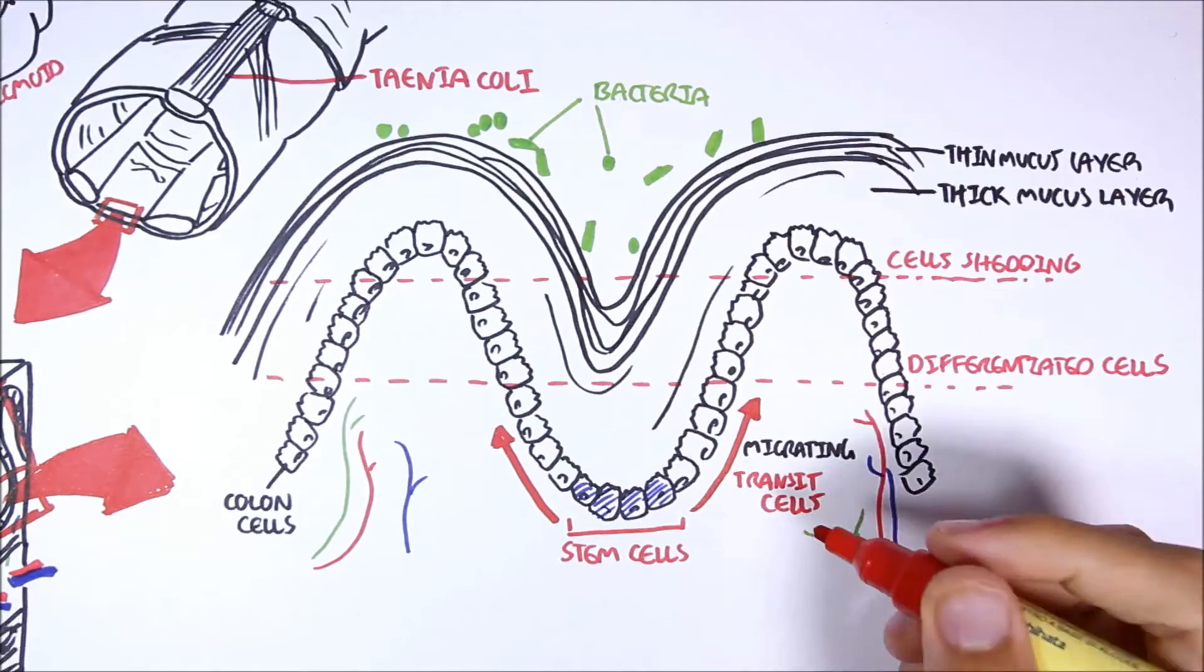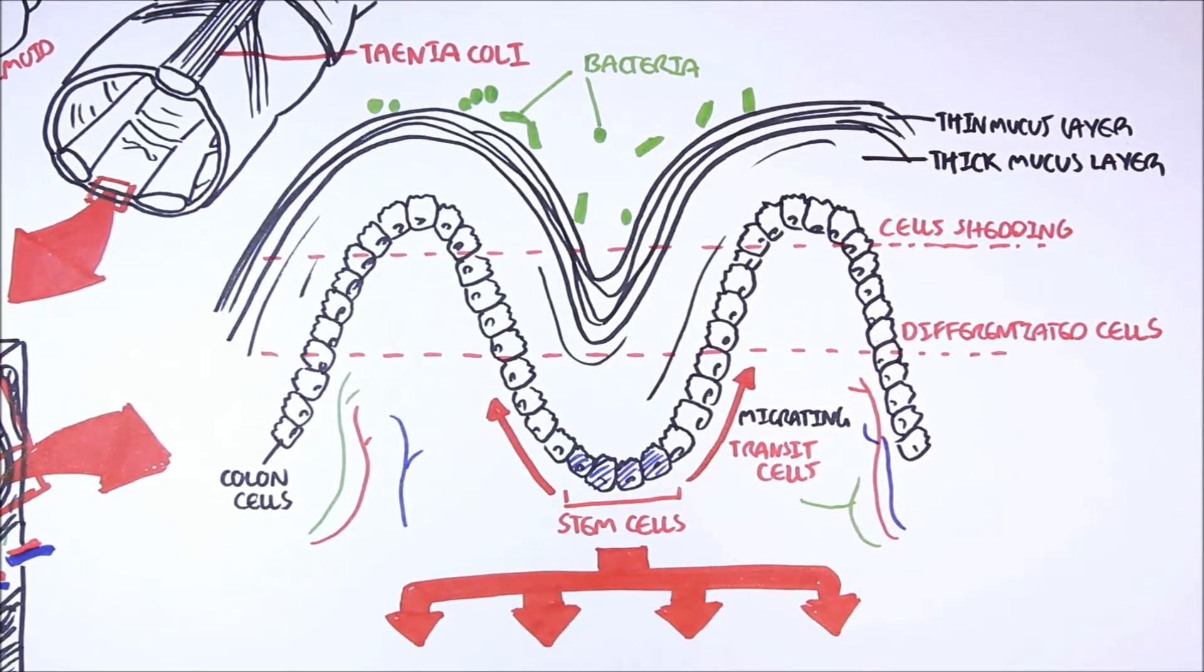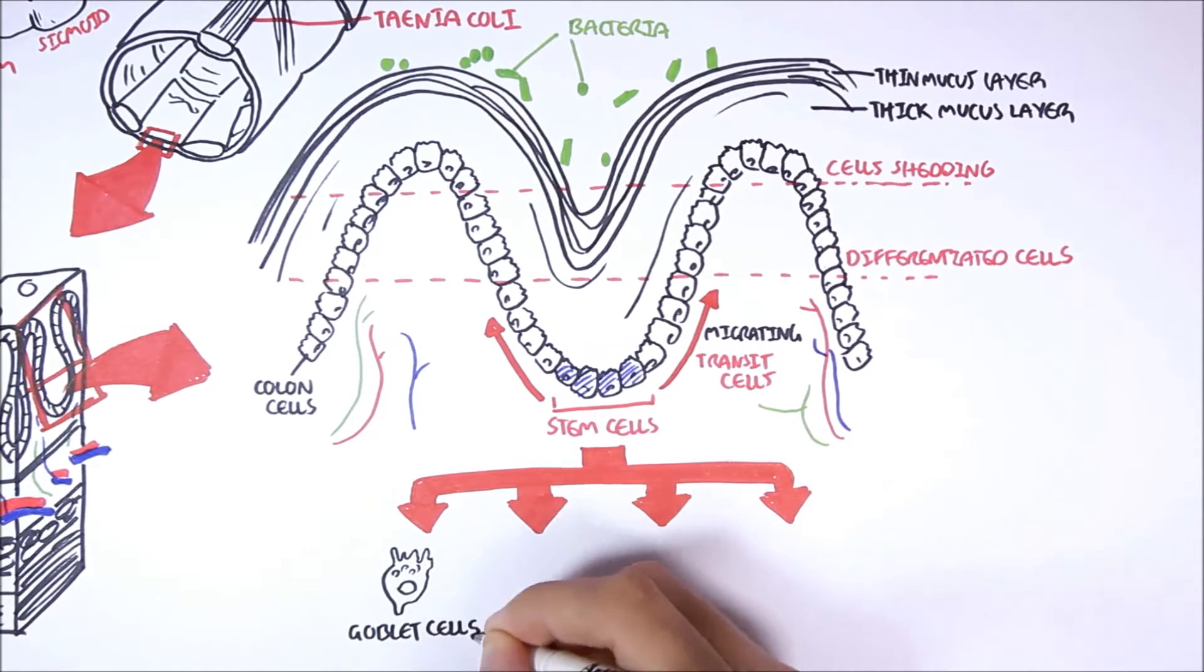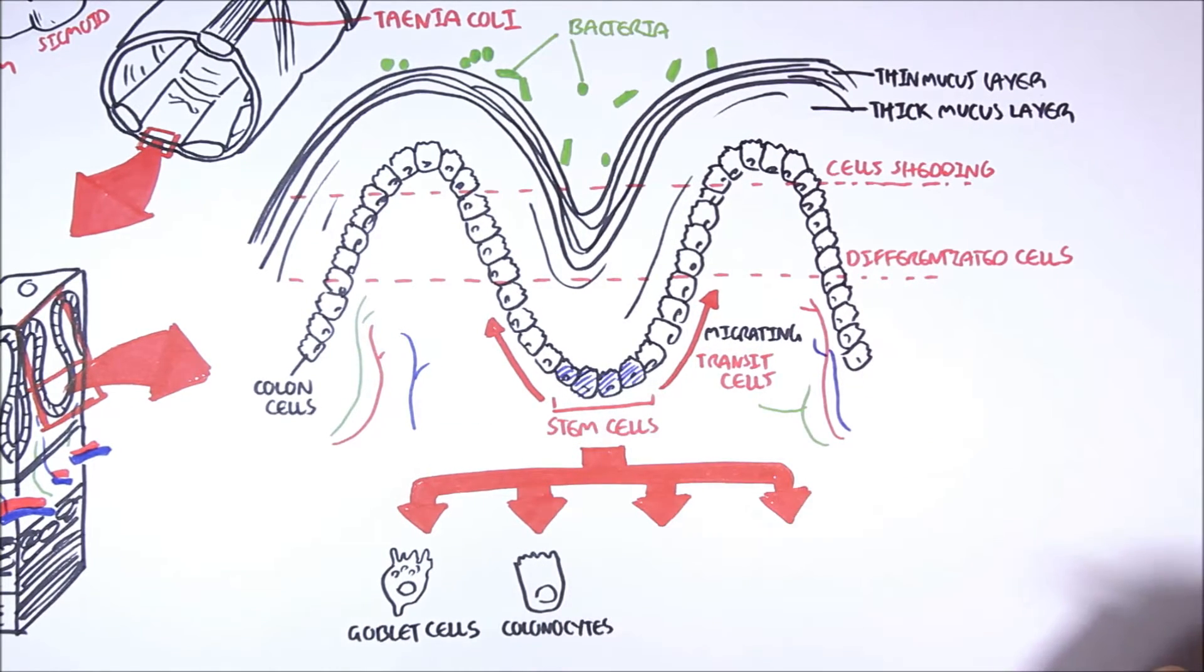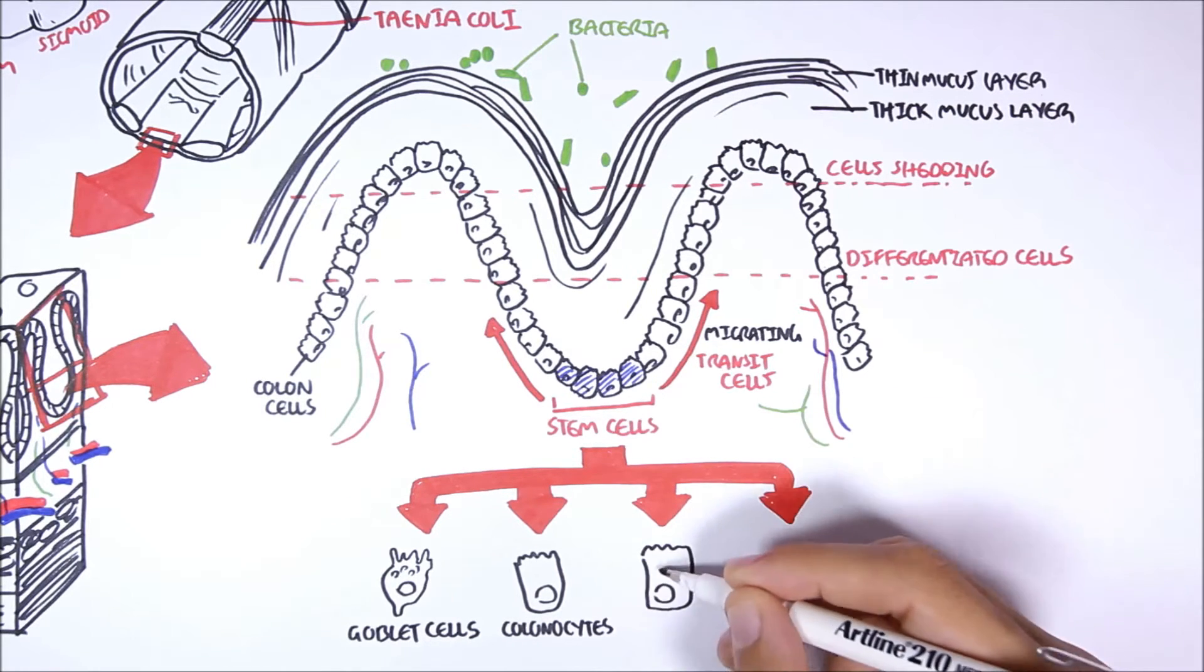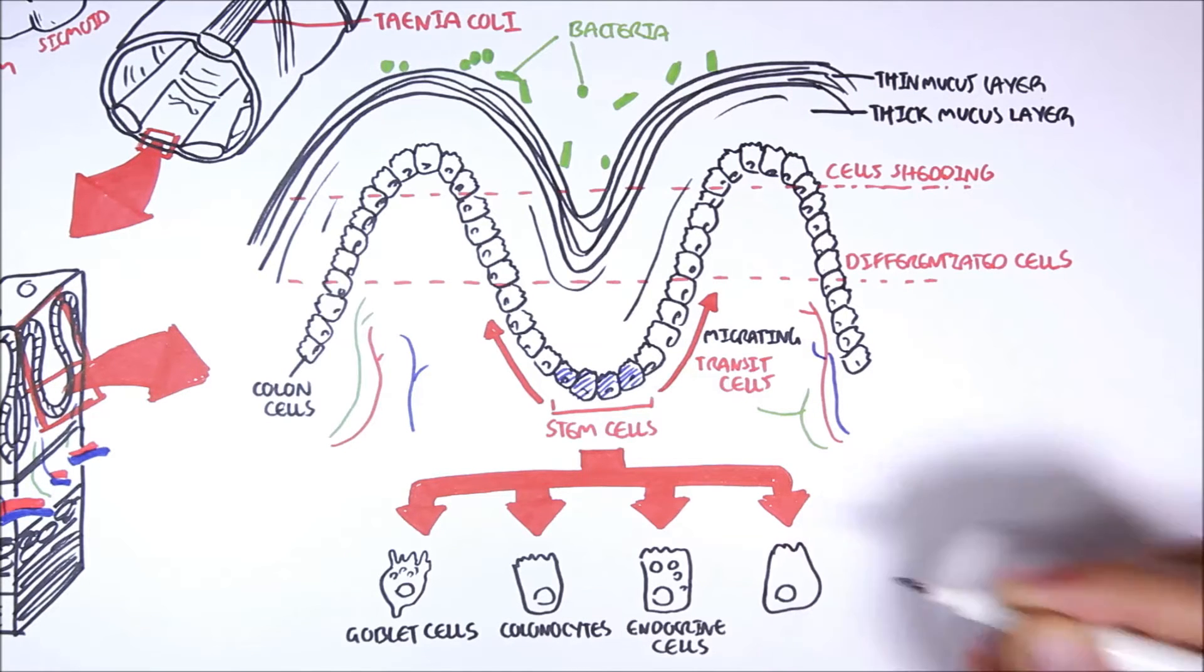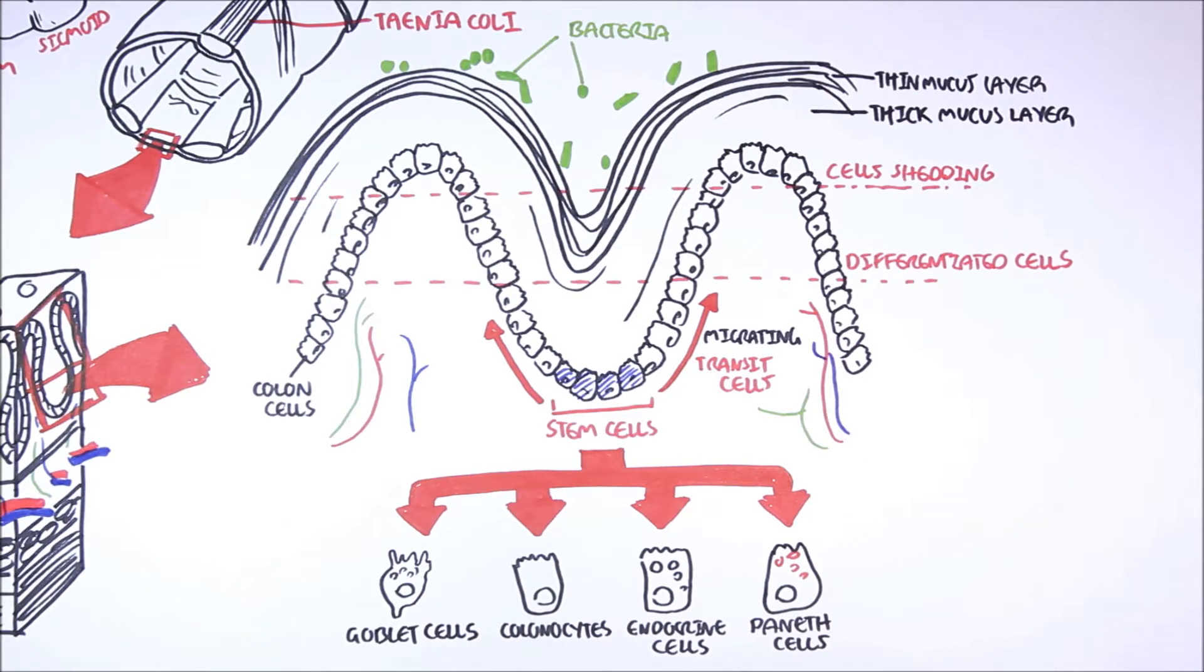The stem cells will eventually differentiate into four main types of cells. These are the goblet cells that secrete mucus, your regular colonocytes which are typical columnar epithelial cells, and endocrine cells that secrete hormones and peptides that maintain homeostasis of the gut. In the colon, there can also be paneth cells that arise from stem cells during development. However, these paneth cells are confined in the small intestine after some time.